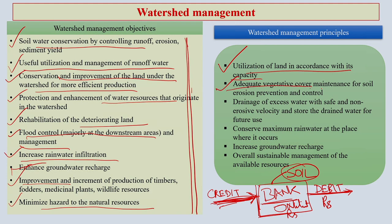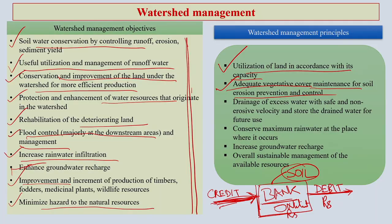Second principle: adequate vegetative cover for maintaining the soil, because vegetative cover helps to reduce erosion and runoff, so the nutrients in the soil will remain where they should be. Drainage of excess water with safe and non-erosive velocity, and storing the drained water for future uses.